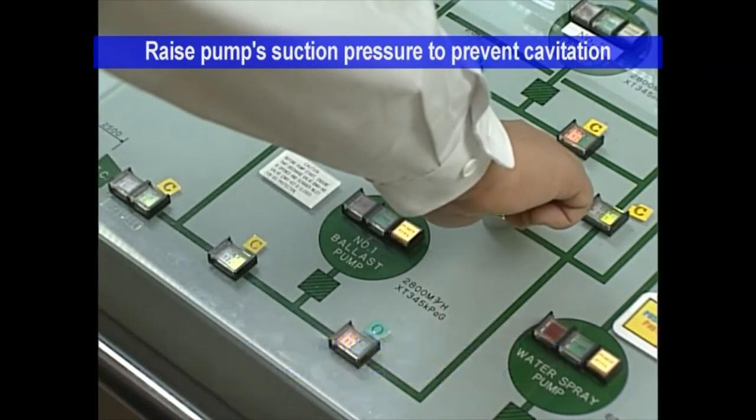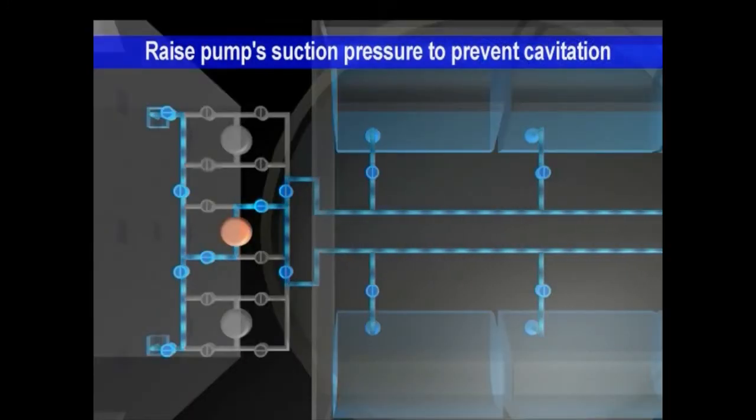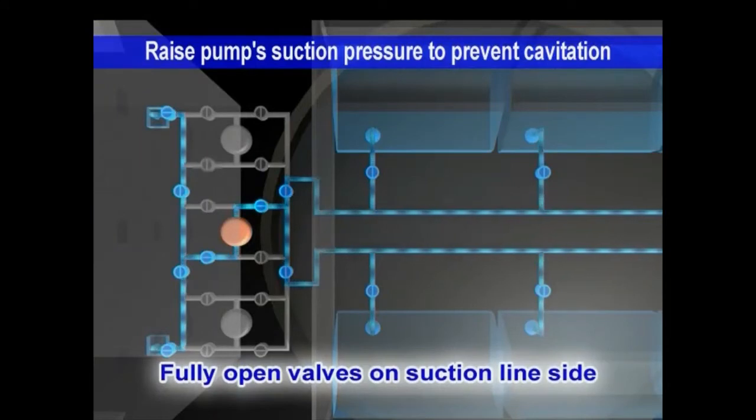To raise the suction pressure, decrease the suction line resistance. With some ships, suction line resistance is decreased by keeping valves on the suction line side fully open at all times. Their opening is not reduced.